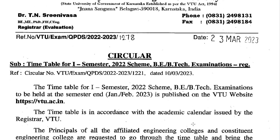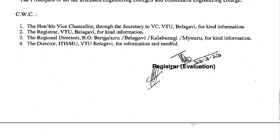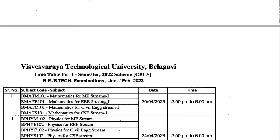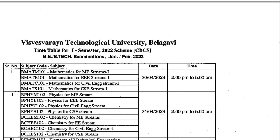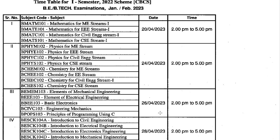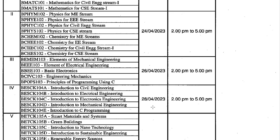You can refer to this notification and go through this circular — there is no much change in the timetable. On 20-4-2023 you will be having the mathematics examination. On 24-4-23 you are going to have physics and chemistry examination as per your cycle. Then on 26th you are going to have elements of mechanical engineering, electrical engineering, basic electronics engineering, engineering mechanics, and principles of programming using C. On 28-4 you are going to have civil engineering, electrical engineering, electronics engineering, mechanical engineering, and introduction to C programming.